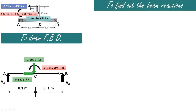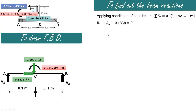Now we find the beam reactions. Since the beam is supported at A and B vertically, we are interested only in the vertical direction. Summation of Fy = 0 is our first condition of equilibrium. Upward forces are positive and downward forces are negative. So Ra and Rb are positive, and 0.1838 kN acting downward is negative. Therefore Ra + Rb = 0.1838 kN — call this equation 1.